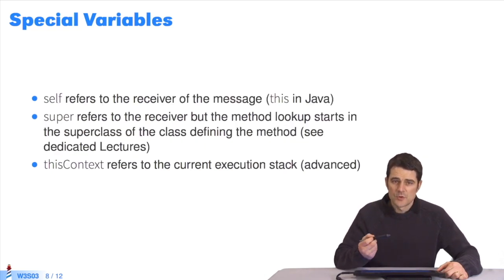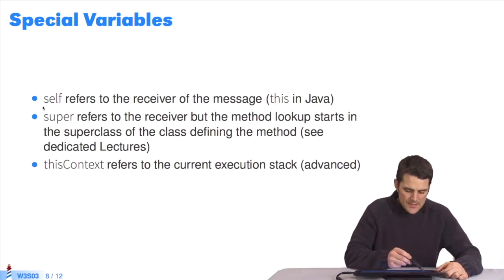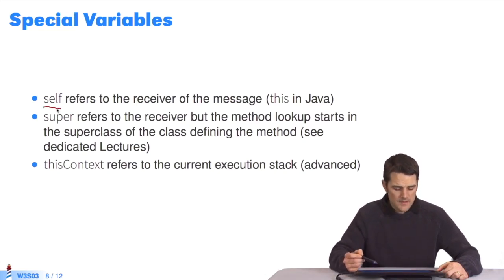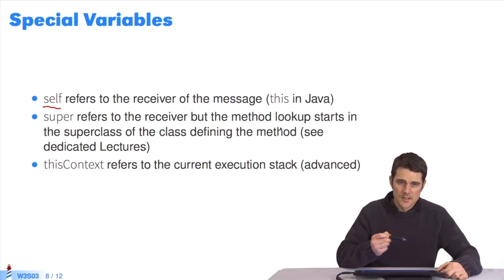Next, there are three pseudo variables. Self refers to the current receiver, and it's equivalent to this in Java. Super always refers to the current receiver, but this time, when you send a message via super, it means the method lookup, the selection method algorithm, which we will see in another class. We'll start in the super class, where the keyword super is written.